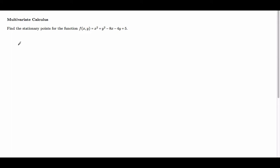To find stationary points, we need to find where the partial derivative ∂f/∂x equals 0 and where the partial derivative ∂f/∂y equals 0.